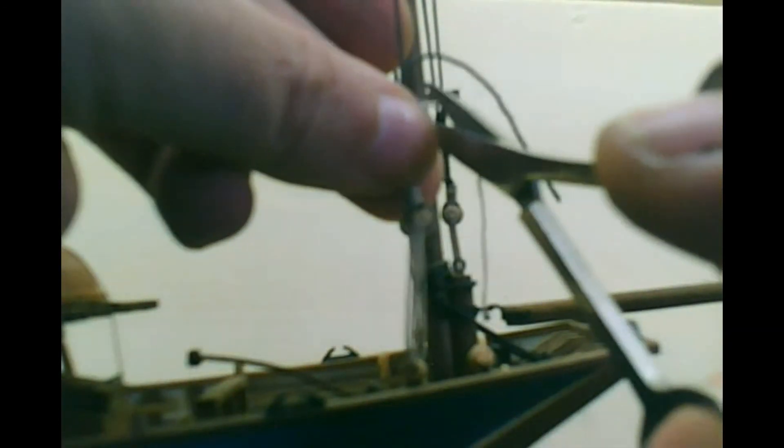Secure this whole thing. That's it, now cutting the excess. Make sure that your CA glue is really dried because there are different types of CA glue, one dries fast and the other one slowly. Make sure before you cut the excess that everything is dried and that's it.